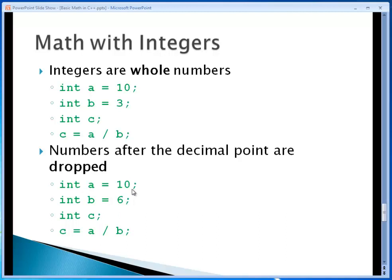So let's use a different example. If a is an integer and has the value of 10 and b is an integer that has the value of 6 and c is also an integer, if we do the equation c is assigned the value of a divided by b, we're saying 10 divided by 6, which we know in our head is 1.667.